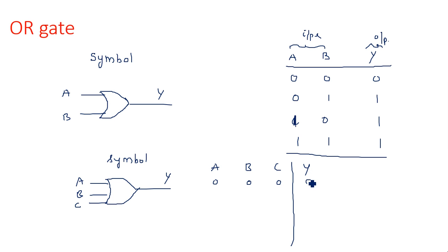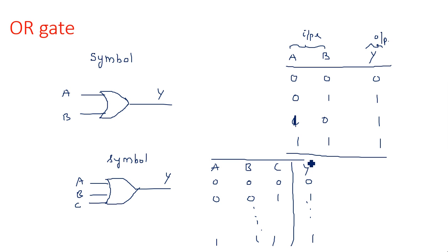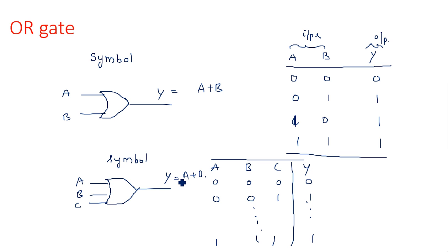For the three-input OR gate truth table with inputs A, B, C and output Y: when all inputs are 0 0 0, output is 0. From 0 0 1 onwards, for all combinations having at least one 1, the output is 1, because in OR gate if any input is 1, output is definitely 1. The Boolean expression is Y = A + B, where plus refers to OR operation.